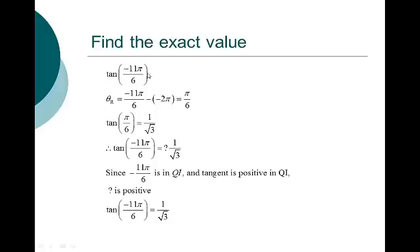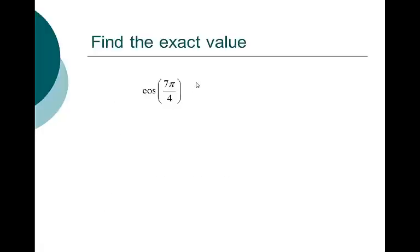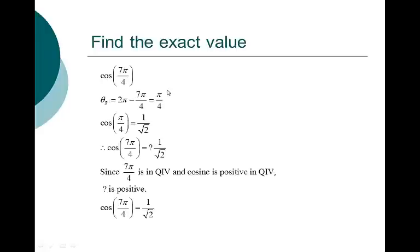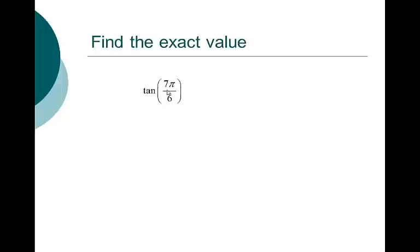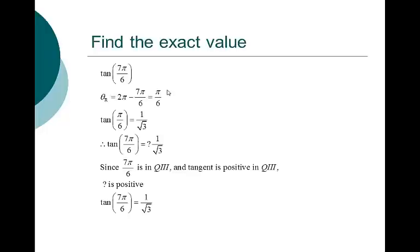Had we pulled the negative out and found the tangent of 11 pi over 6, that would have been negative 1 over square root of 3, and the negative out front would make the answer positive — either way you get the same answer. Cosine of 7 pi over 4: right away you know you're talking about a pi over 4 angle. Pi over 4 has a cosine of 1 over square root of 2. Since 7 pi over 4 is in quadrant 4 and cosine is positive there, the answer is positive 1 over square root of 2. Tangent of 7 pi over 6: it's in quadrant 3, tangent is positive there, reference angle is pi over 6, so the answer is positive 1 over square root of 3.